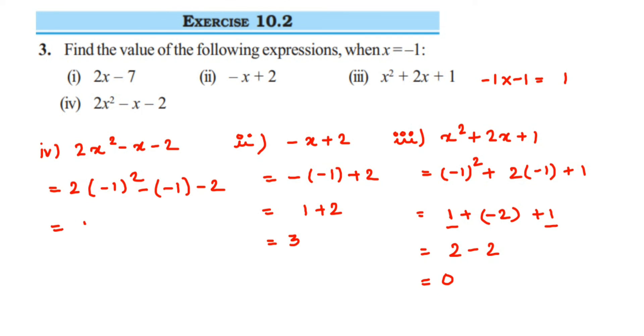So 2 into 1 and here we have minus x minus 1. So minus times minus is plus. So plus 1 then minus 2. So this is 2 plus 1 minus 2. 2 plus 1 is 3. So 3 minus 2 which is equal to 1. So 1 is the answer for this question.